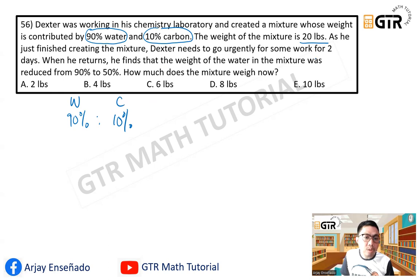And the total weight of the mixture is 20 pounds. Since the percentage of water and carbon are given, we can solve for the total pounds. So multiply by 20. Let's get 10% of 20 pounds. So we have 20, multiply by 10%. And 10% in decimal, that is 0.10 or simply 0.1.